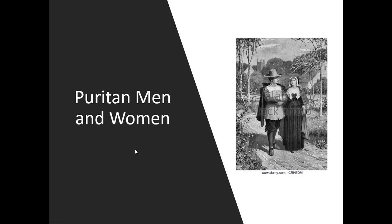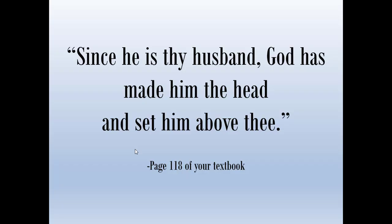Puritan women did not have social equality. From the textbook: 'Since he is thy husband, God has made him the head and set him above thee.' They believed men were superior to women, and a woman's duty was to love and revere her husband — subordinate in every facet of life. Women were expected to have five to seven or more children and had no equality in the church either. We talked about how captive women didn't want to return to the Puritan ways because the native ways were more suitable for them.